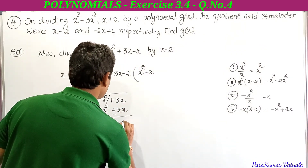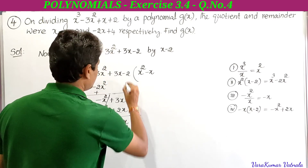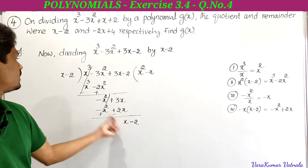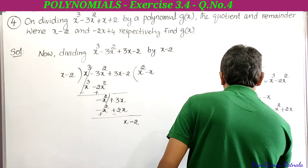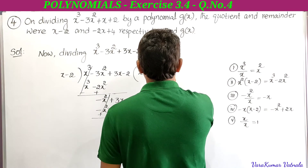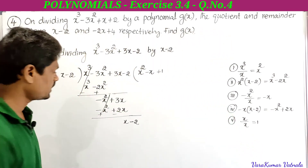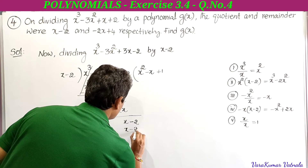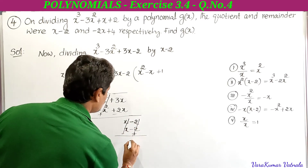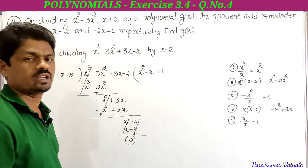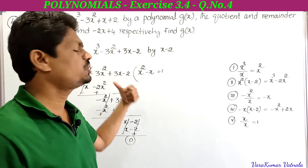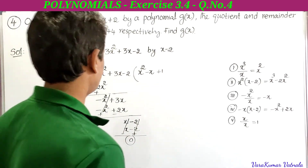Now dividing x by x gives 1. Write 1 in the quotient area. Multiply 1 by the divisor (x - 2) to get x - 2. Subtract: x - x cancels and -2 - (-2) cancels, giving remainder 0. So the quotient is x² - x + 1, which is g(x).